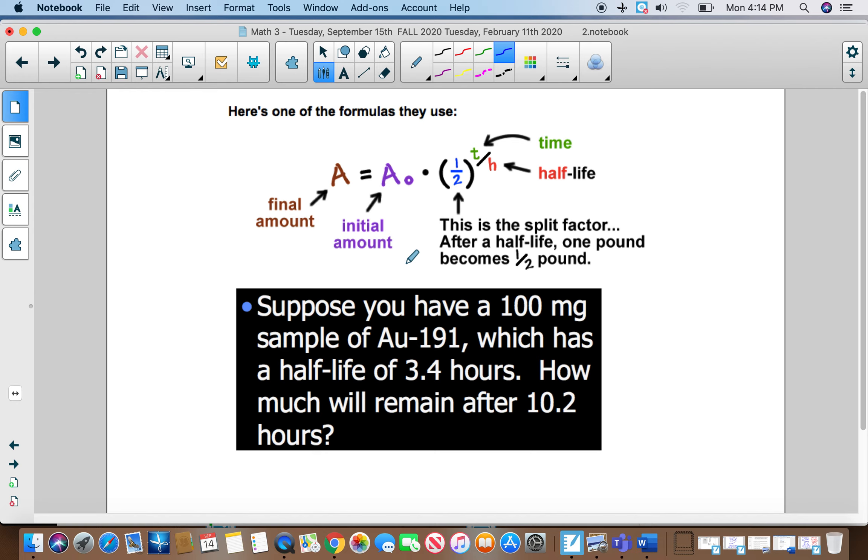This is a good example of one that you couldn't do in your head. It says suppose you have a 100 milligram sample of AU-191, which has a half-life of 3.4 hours. How much will remain after 10.2 hours? Now for this one, you can tell the numbers aren't going to come out very well, because they're not whole numbers. But we're still going to do it the same way. So you have 100. That's what you start with. And then you're going to multiply that by 1 half. The time that you're talking about is 10.2, and the half-life is 3.4. So you're going to do 100 times 0.5 to the—I have to put this in parentheses—10.2 divided by 3.4. And so this one also comes out as 12.5, and you're going to have 12.5 milligrams.